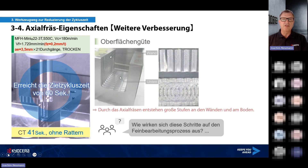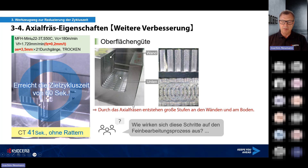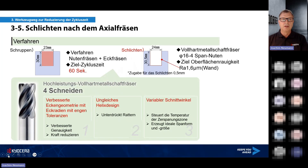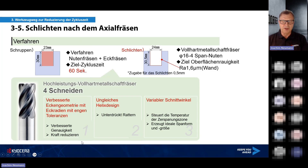Schauen wir uns die Seitenwände an: Die Oberflächengüte ist immer noch geschruppt. Wir haben ein großes Restmaterial, Überhänge stehen – dieses wellige Profil. Wie wirkt sich das bei der Schlichtbearbeitung aus, wenn wir diesen Zickzack-Prozess durchführen? Beim Schlichten: Wir müssen auf 24 mm Nutbreite, 30,5 mm tief, Zielzeit 60 Sekunden, RA-Wert 1,6 µm. Als Schlichtfräser setzen wir einen Vollmetall-Schaftfräser ein.